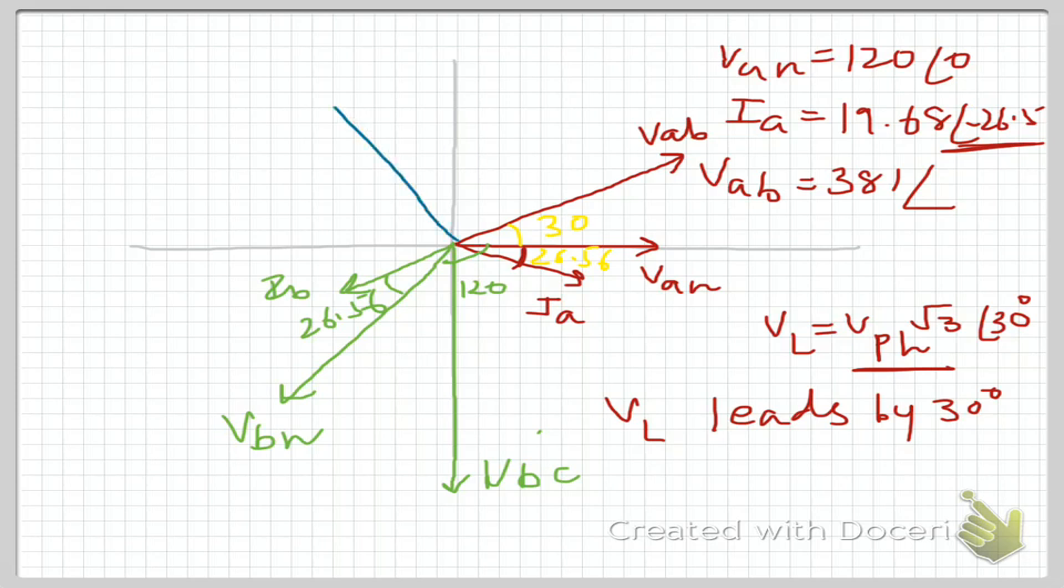And the last group is for VCN. So your VCN is here. So this is your 120 degrees. Now for VCN, VCA leads it by 30 degrees. So approximately here will be your VCA. And IC lags behind it, so IC will be almost here. So this is 26.56 IC, and this is 30 degrees. That's your VCA. So that's your complete phasor diagram.